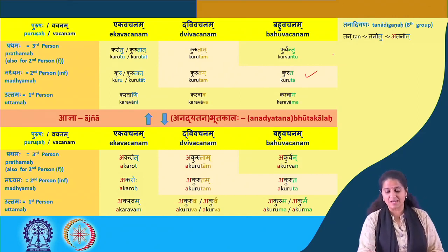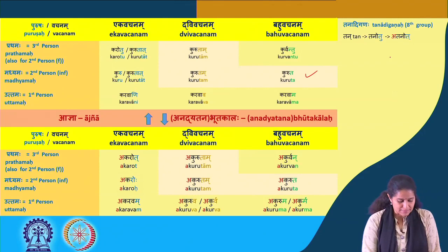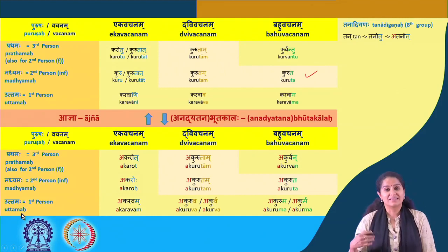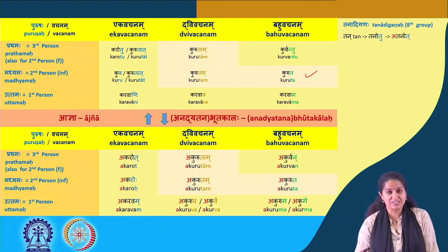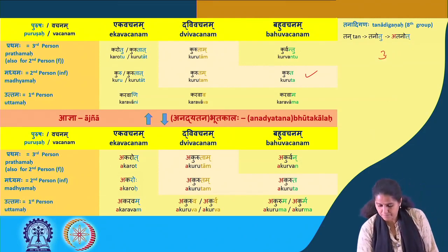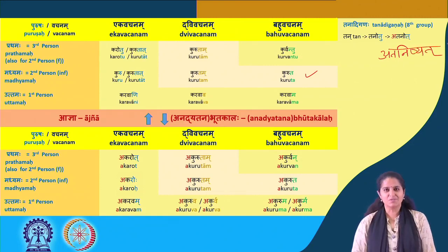Just before we move on: Tan becomes Tanothu in the imperative, Atanoth in the past tense. What would it become in the Kriyatipattil ring? We have Tanishyati for the future, and it will become Ataneshyat.